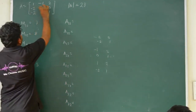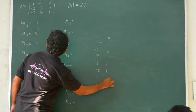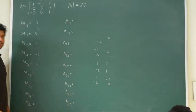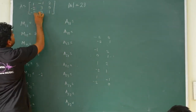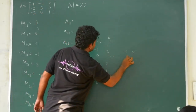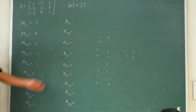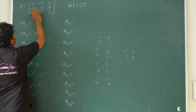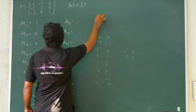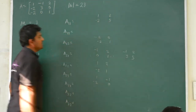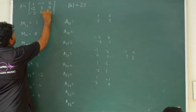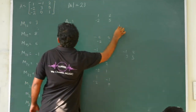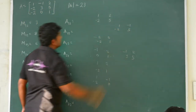For M23, hide the second row and third column. Elements are 1, minus 1, minus 2, 0, giving value minus 2. For M31, hide the third row and first column. Elements are minus 1, 2, 3, 5, giving minus 5 minus 6 equals minus 11. For M32, third row second column, elements are 1, 2, minus 2, 5, giving 5 plus 4 equals 9. For M33, third row third column, elements are 1, minus 1, minus 2, 3, giving a value of 1.